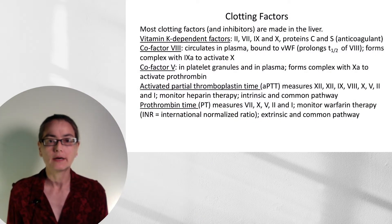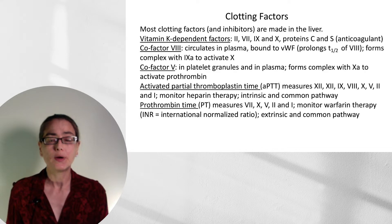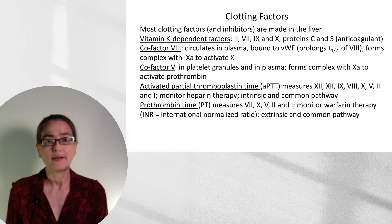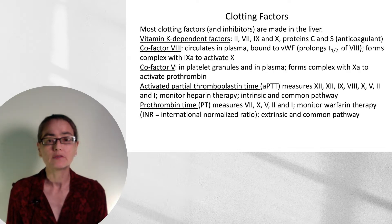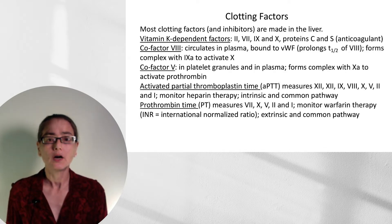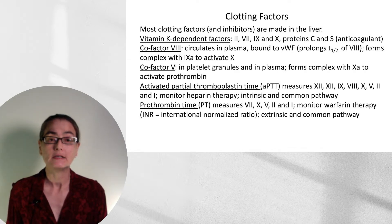Now let's take a minute to talk about clotting factors. Most of them, as well as inhibitors, are made in the liver. This is an important consideration when you have a patient in liver failure because they may have a bleeding diathesis. The vitamin K-dependent factors are 2, 7, 9, and 10, as well as protein C and S — you should know these, because we have a therapeutic intervention, namely warfarin, in which we address vitamin K.